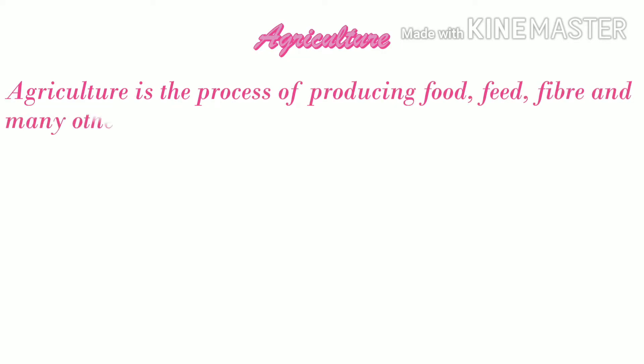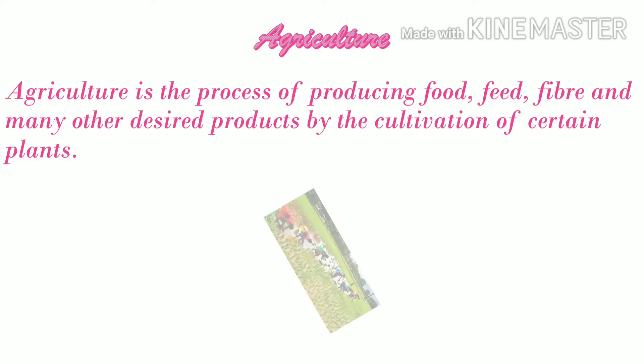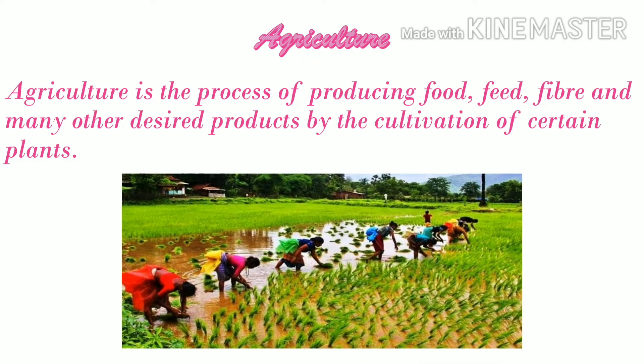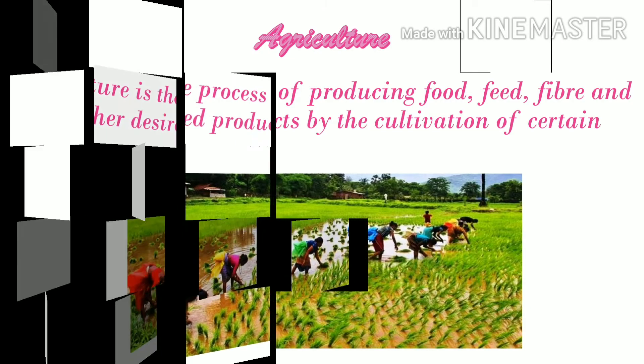Agriculture is the process of producing food, feed, fiber, and many other desired products by the cultivation of certain plants. The practice of growing plants on a large scale for food or other purposes is called agriculture. There are six stages of agriculture. First, the field is plowed. Second, manure or fertilizers are added to the soil.